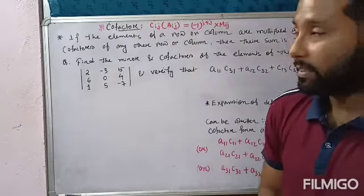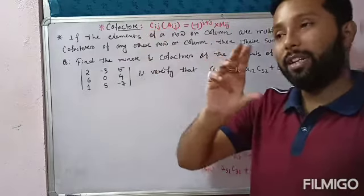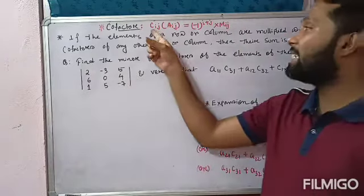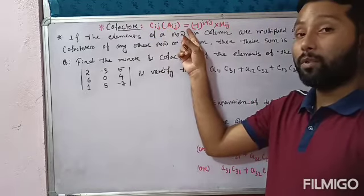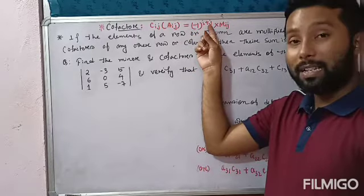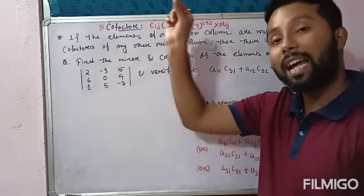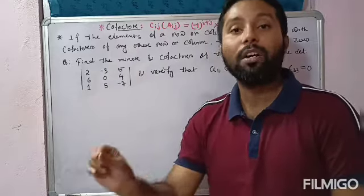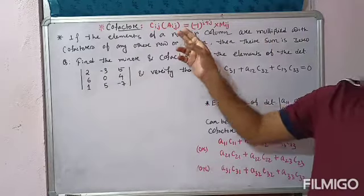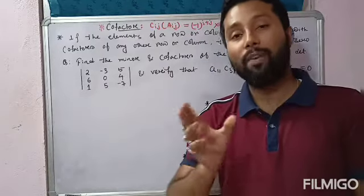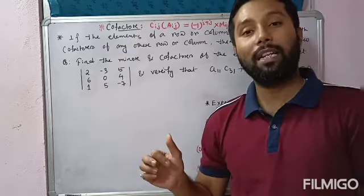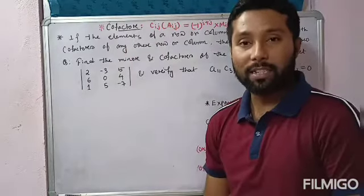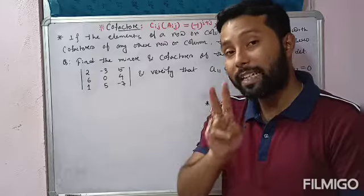The cofactor is denoted by Cij or capital Aij. The formula is: Cij equals minus one to the power i plus j, multiplied by Mij, the minor of that element. This is the formula to calculate the cofactor of an element of a determinant. Apart from these two definitions, I have also given two important formulas.